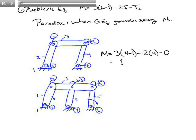If we use Grubler's equation to calculate, we'll find that M is equal to three times (five minus one), minus six full joints, and no half joints. We'll find that our degrees of freedom are zero. When we have zero degrees of freedom, that means we have a structure — no ability to move. However, we know this mechanism does have the ability to move. So we know this must be a paradox, because what we know the degrees of freedom should be is not equal to what we get with Grubler's equation.